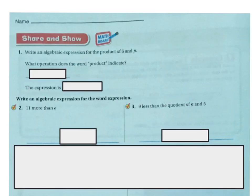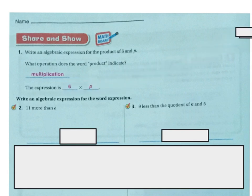Write an algebraic expression for the product of 6 and P. What operation does the word 'product' indicate? As I said before, it indicates multiplication. So it's 6 times P, or 6P, or any of the variations we discussed earlier.